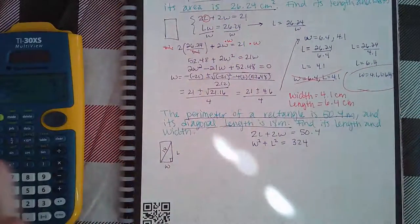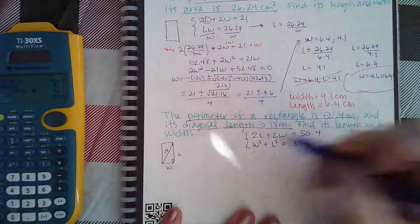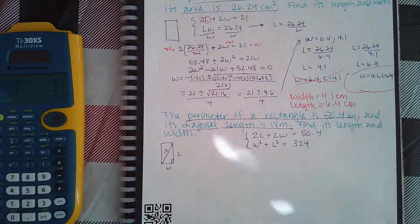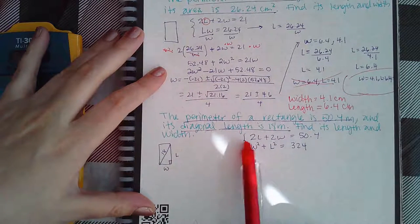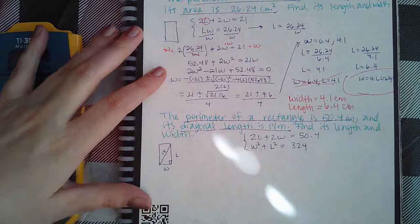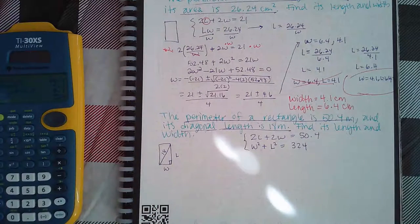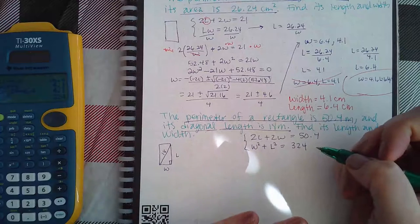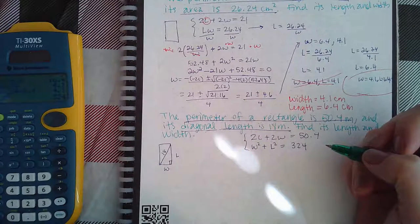So when we're solving a system and this is my system, you always want to solve for a variable that doesn't have an exponent on it. So I'm going to actually choose the top equation this time and try to get one of these letters by themselves. It doesn't matter whether you choose to get L by itself or W by itself.